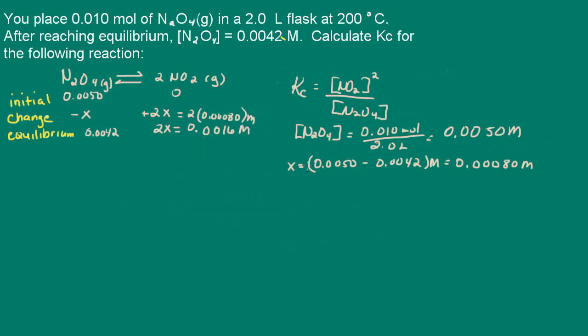Now we have all the information we need to calculate K. So, let's go ahead and plug everything in. For nitrogen dioxide, we have 0.0016. And remember, we have to square that. And we're going to divide that by 0.0042 molar. And our equilibrium constant is going to be 6.1 times 10 to the negative 4.